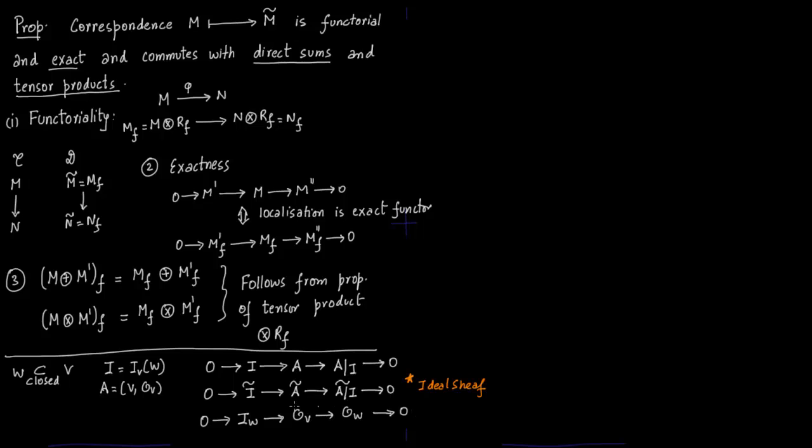This is O of V and this is O of W to 0. This is precisely what we have done before - that is how you define W. You basically from O of V you mod out all the functions which lie in ideal associated with W. You can check it on each of the open set or you can just see it as a tensor product.